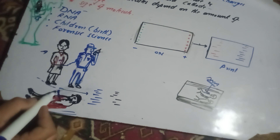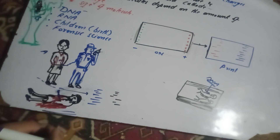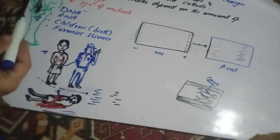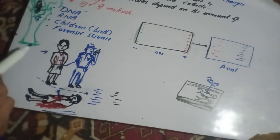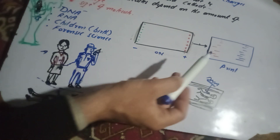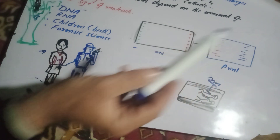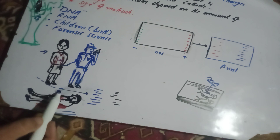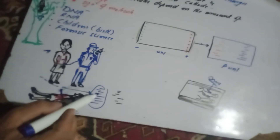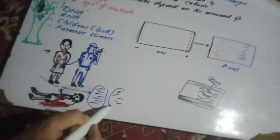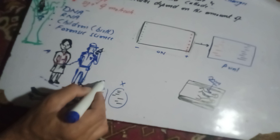The DNA sequence from sample A is compared with the suspect's DNA sequence. If the DNA sequences are similar, the identity is confirmed and the crime can be detected. This is how electrophoresis is used in crime detection.